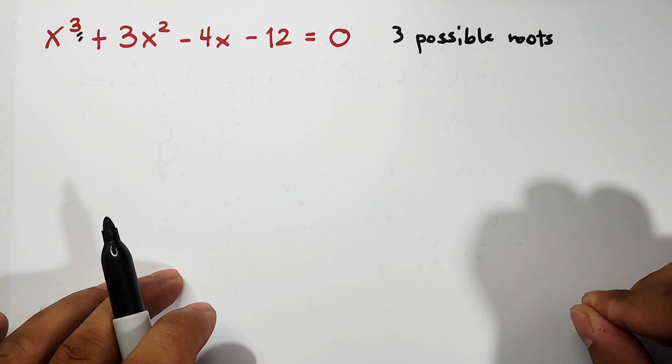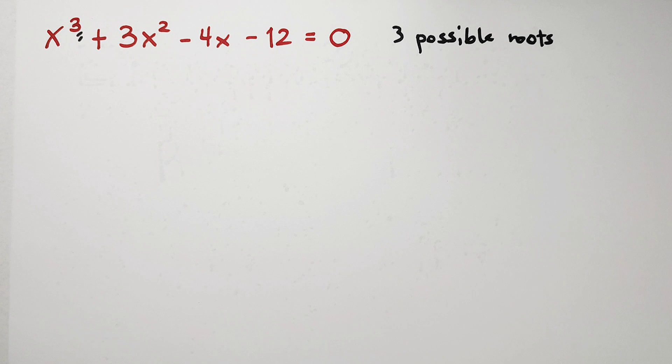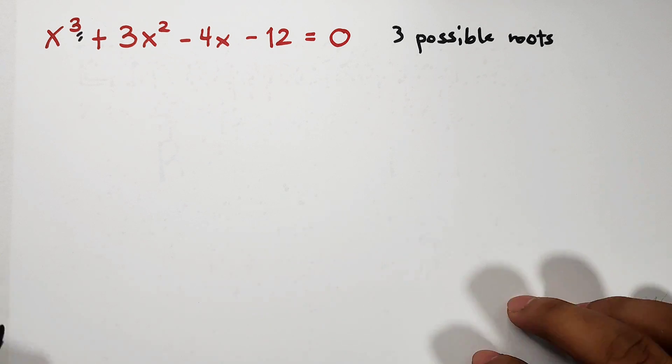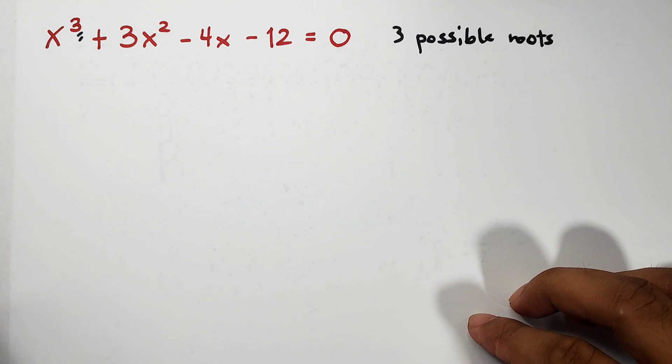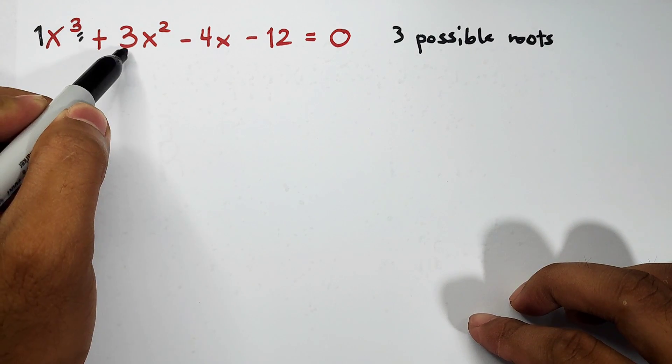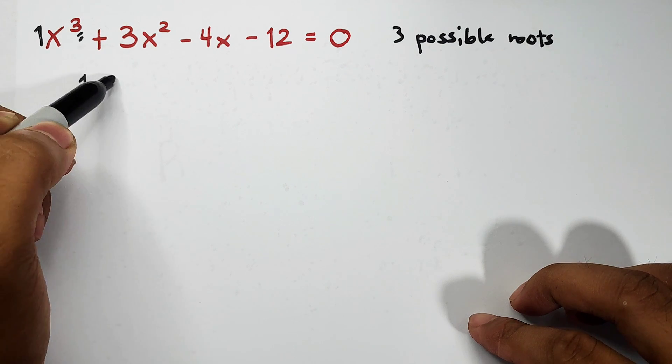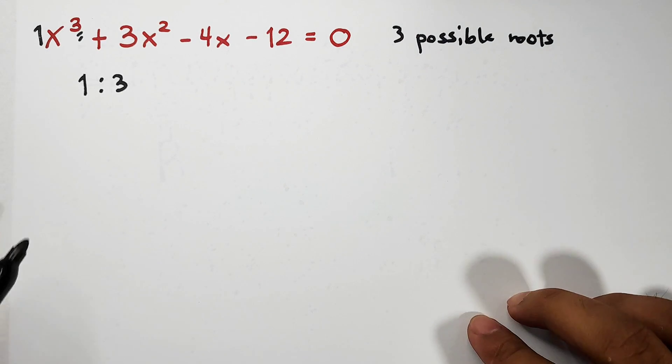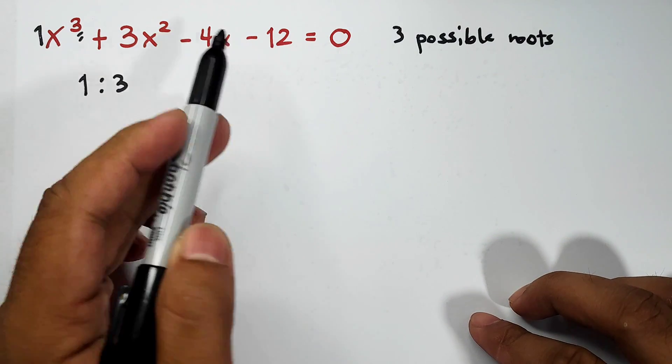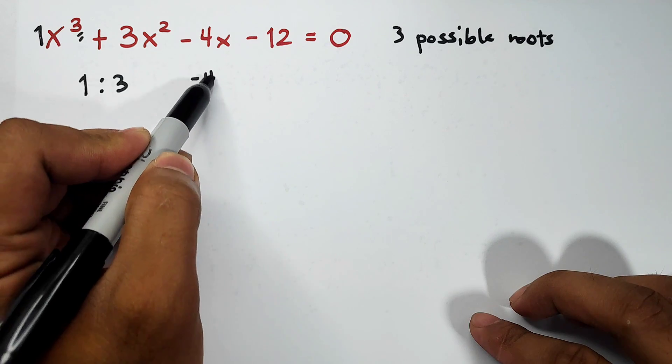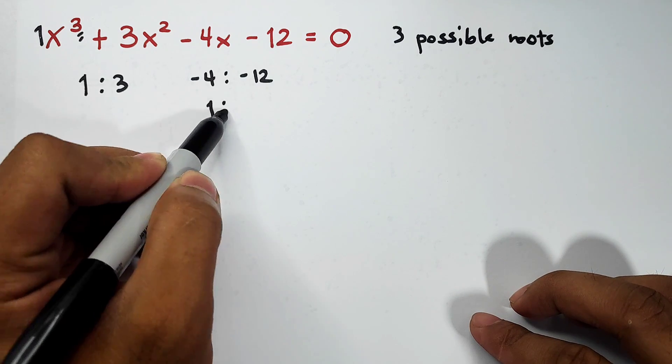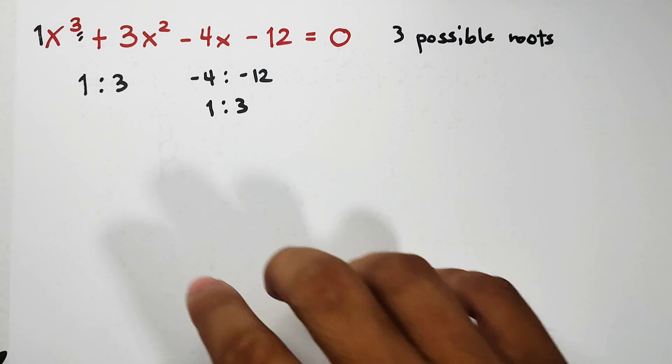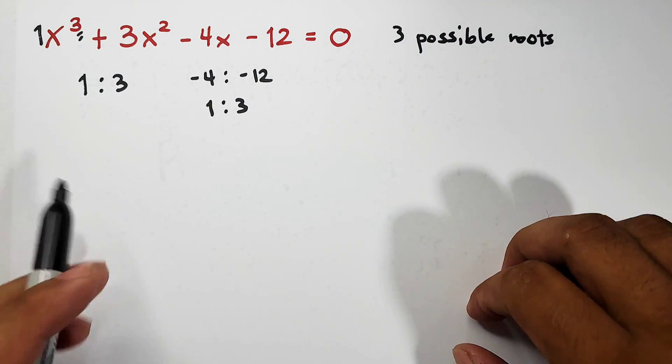First, when I encounter this kind of polynomial with 4 terms, I will check if we can use factoring by grouping. How are we going to determine if we can use factoring by grouping? Get the ratio of the two groups of the equation. First, get the ratio of the coefficients: 1 and 3, that is 1 is to 3. Now for the second group, negative 4x minus 12, the coefficients are negative 4 is to negative 12, which simplifies to 1 is to 3 or one-third. Since the ratios are equal, it is possible for us to factor this one by grouping.